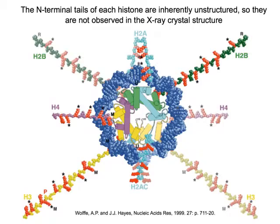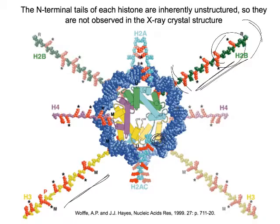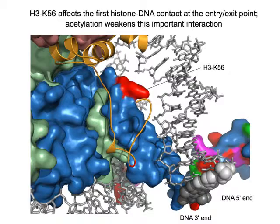We already looked at this slide in the nucleosome video, but I want to remind you that a lot of these modifications are happening on the parts that were not in the structure we looked at. A lot of those lysines and arginines and the serines and threonines are sitting out in these tails — the N-terminal tails that extend away from the globular core of the nucleosome core particle. While it's possible for modifications to change the physical properties of a nucleosome, for the most part they're just going to sit out here as information that readers can come along and bind to, deciding whether they ought to do something to this nucleosome.